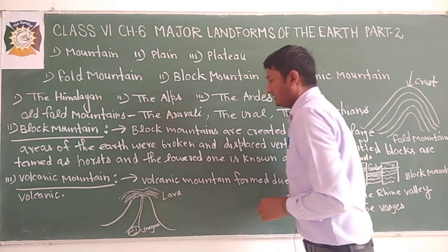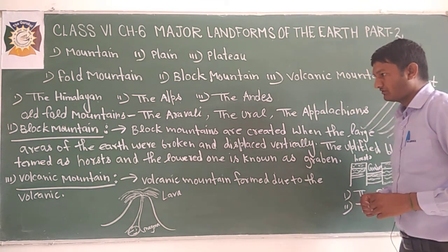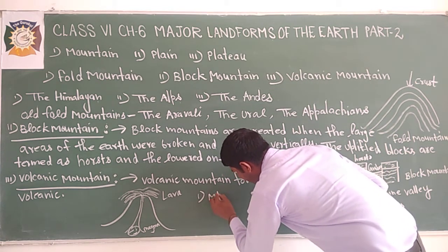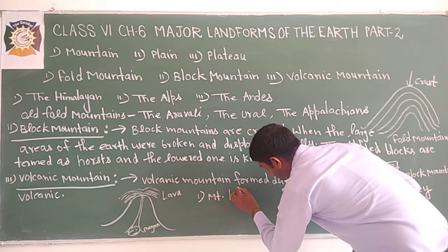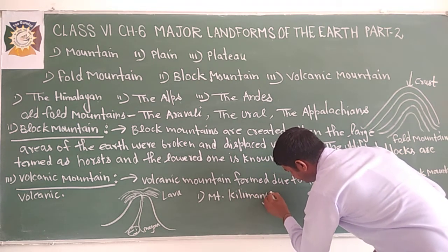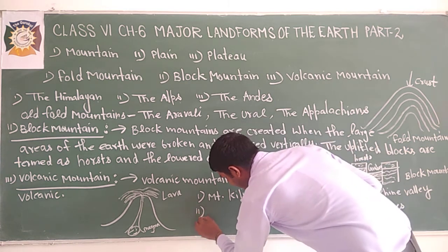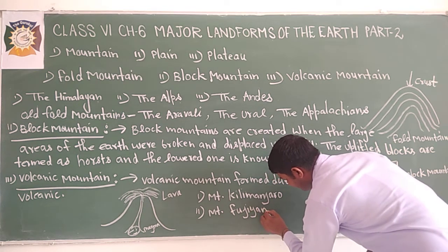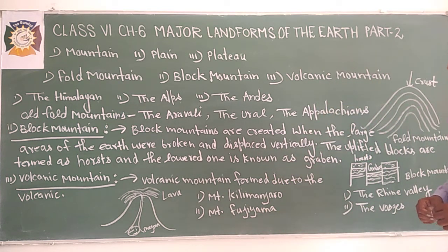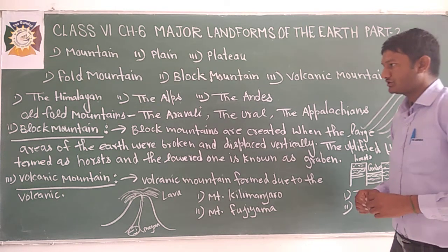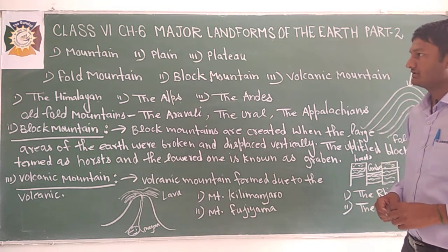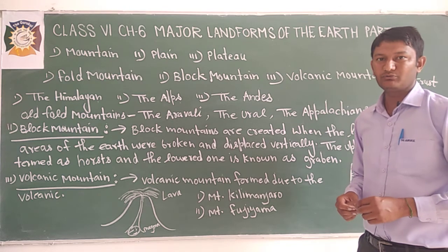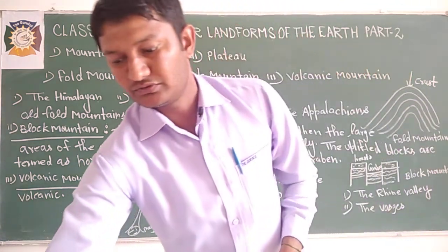In this way, volcanic mountains are formed. The examples of volcanic mountains are Mount Kilimanjaro and Mount Fujiyama. I hope you have understood the three types of mountains — the fold mountain, the block mountain, and the volcanic mountain. Now let us come to know the uses of mountains.